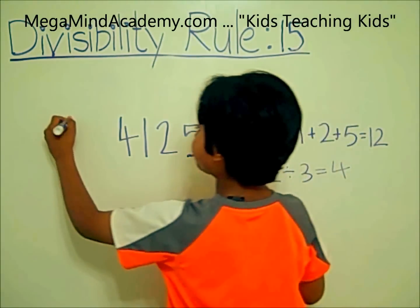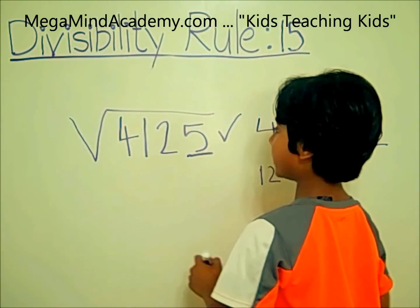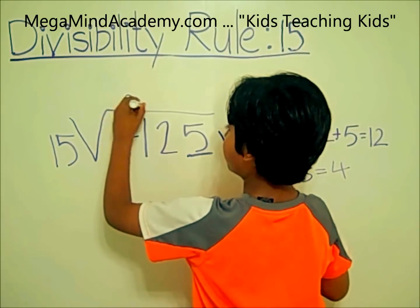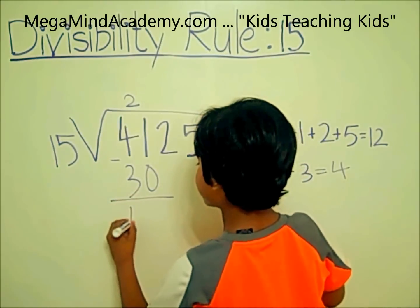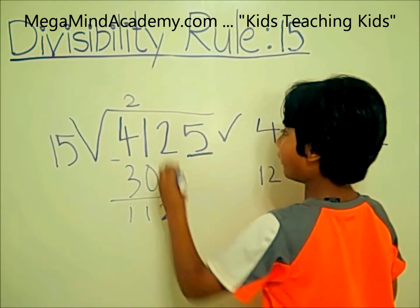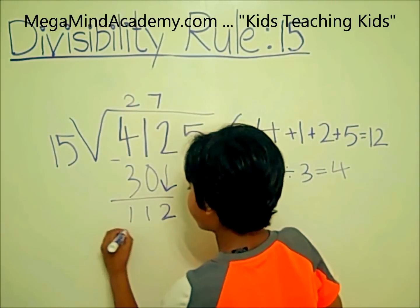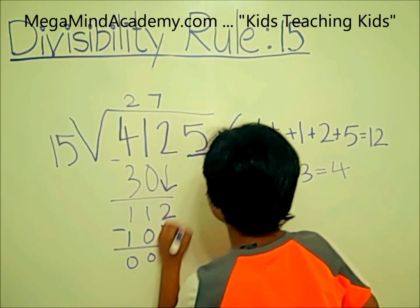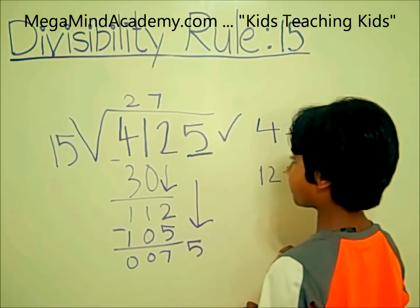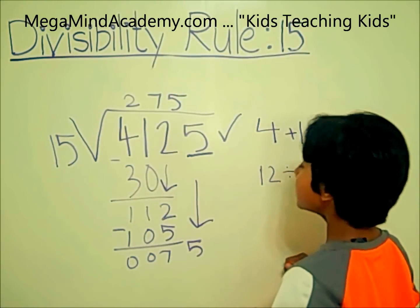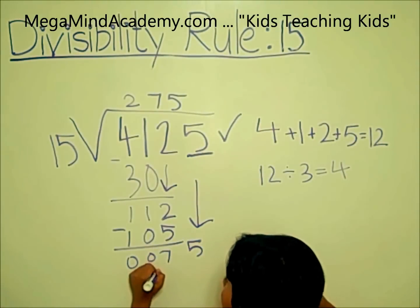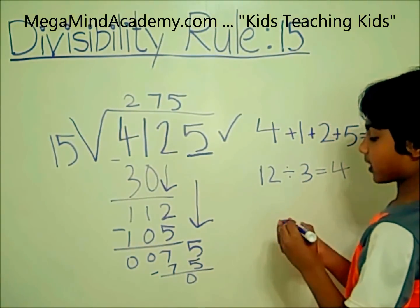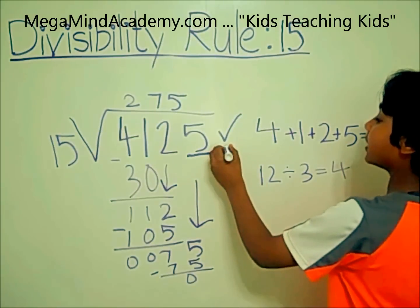Let's check. 4125 goes inside the division sign, and 15 goes outside. 2 times 15 is 30. 41 minus 30 equals 11. Bring down 2, making it 112. 7 times 15 is 105. 112 minus 105 equals 7. Now we bring down the 5, making it 75. 5 times 15 is 75. 75 minus 75 equals 0. So that means 4125 is divisible by 15.